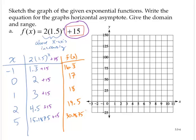Based on what we've seen before, we should expect our horizontal asymptote to rise 15 units as well. So let me go ahead and put in my horizontal asymptote at y equals 15. So there's my horizontal asymptote at y equals 15.